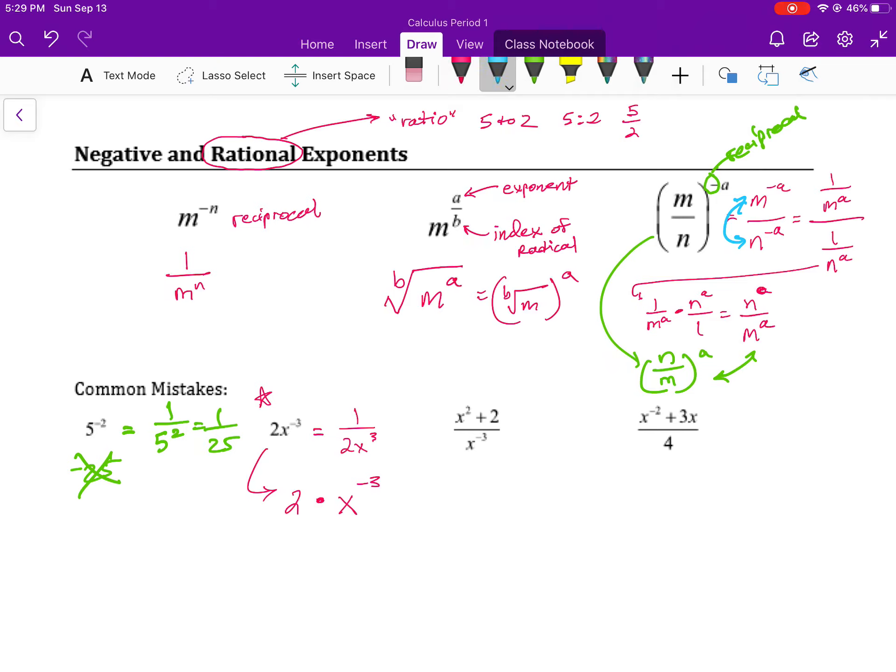And x to the negative third, that is equal to 1 over x cubed. So the other way to write this problem is 2 times 1 over x cubed giving us 2 over x cubed. So be very, very, very careful with coefficients when you are working with problems that have negative exponents of which there will be many.